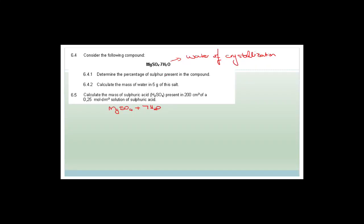They've asked us to determine the percentage of sulfur present in the compound. We're going to look at the molar mass of the whole compound and the molar mass of sulfur, then calculate the percentage. For this you need your periodic tables — I keep stressing that you need periodic tables and data sheets with you at all times when studying chemistry, together with your pens, pencils, and calculators.